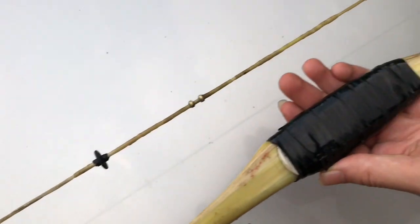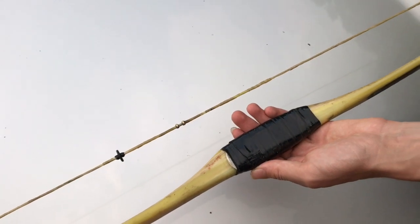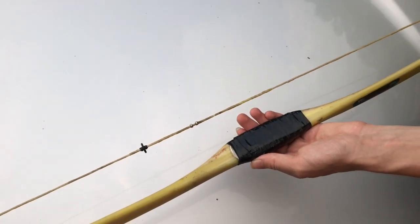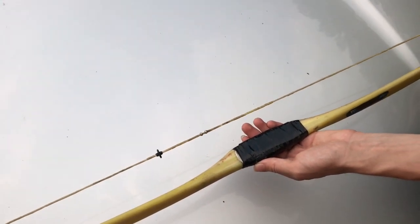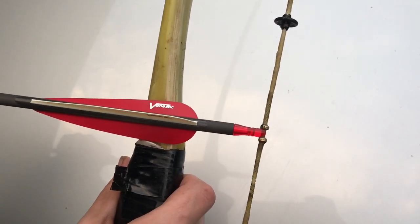As a general rule of thumb, a longbow like this will be three inches shorter than the bow itself, and a recurve bow will be four inches shorter than the bow itself. But this does not account for your own personal preferences.